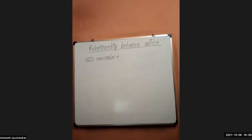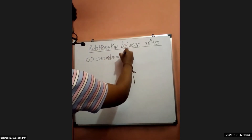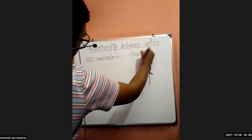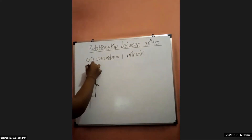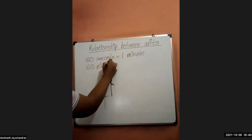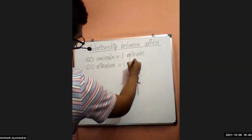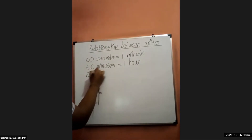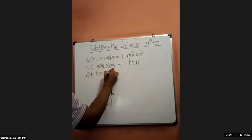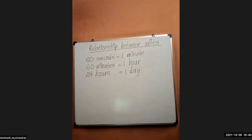60 seconds is equal to one minute. 60 minutes is equal to one hour. 24 hours is equal to one day. Please quickly make a note on this. It's easier for me and also easier for you all so that I could move on further.